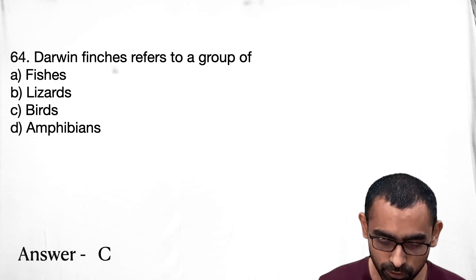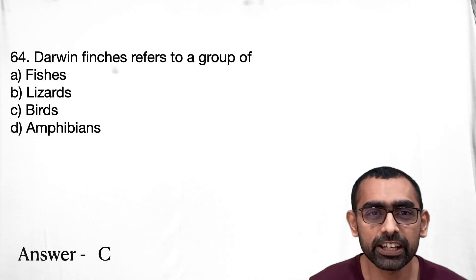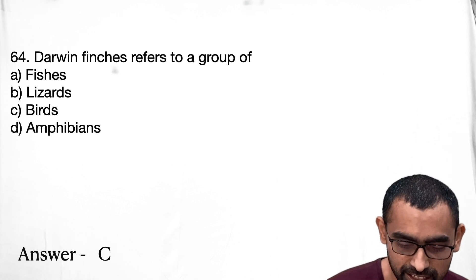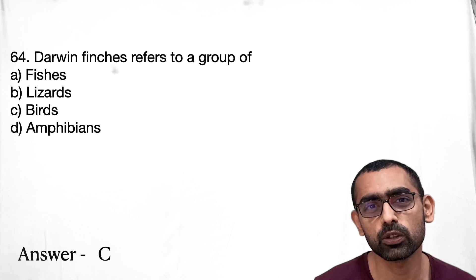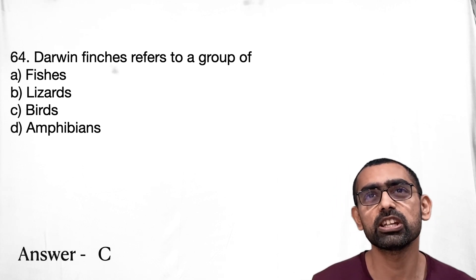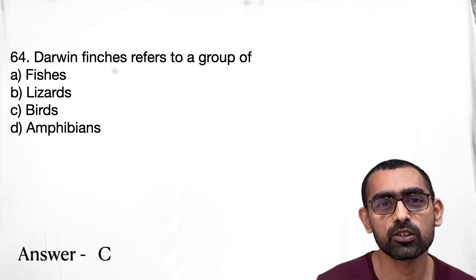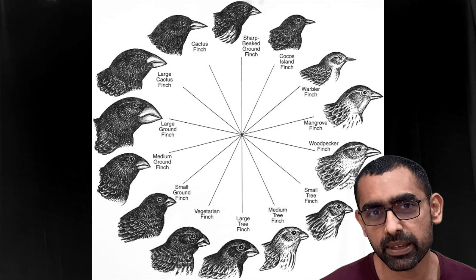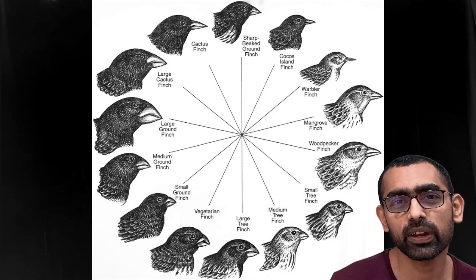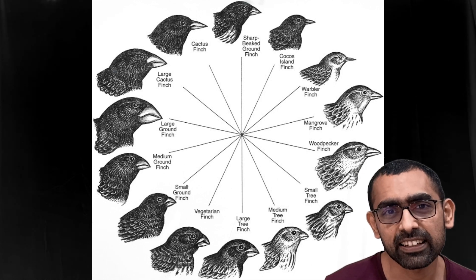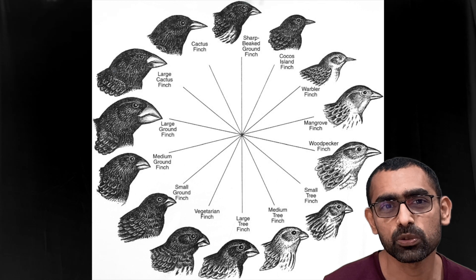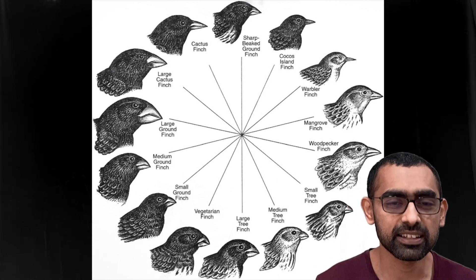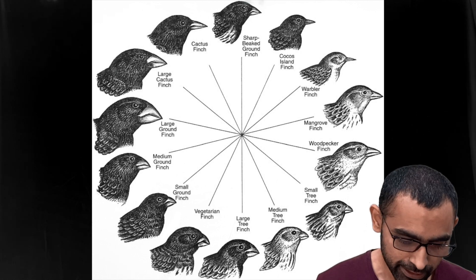Question 64 is about Darwin's Finches. These refer to a group of bird species associated with Charles Darwin and the theory of evolution. Many of these species are endemic to certain places, and they were used as a model to demonstrate evolution — you can observe the similarities across species and how new features emerged through evolutionary processes. Darwin's Finches make the model of evolution easy to understand.